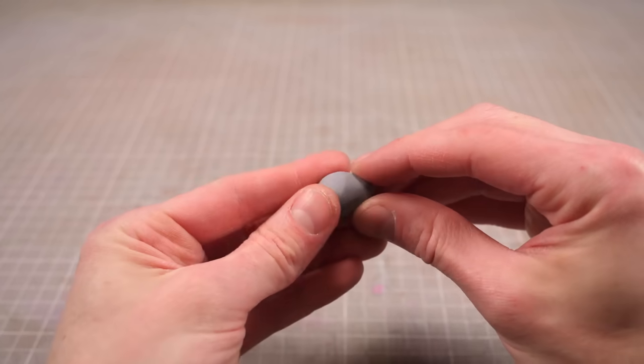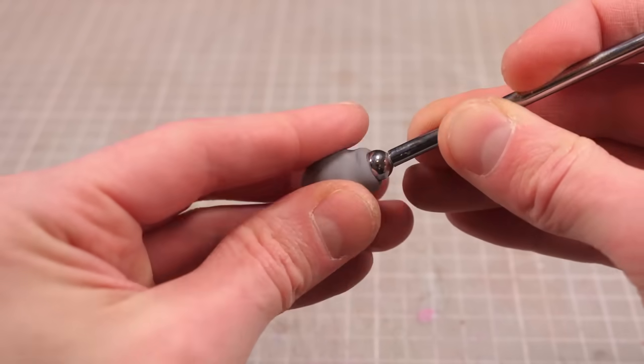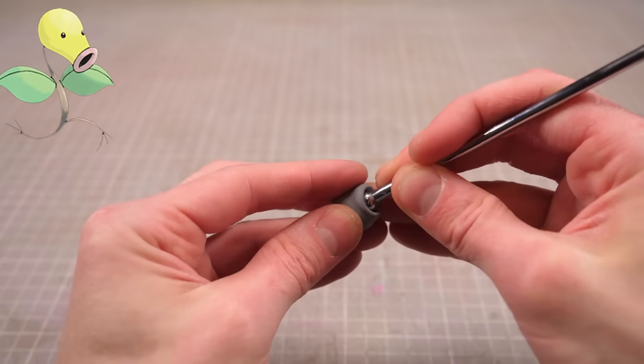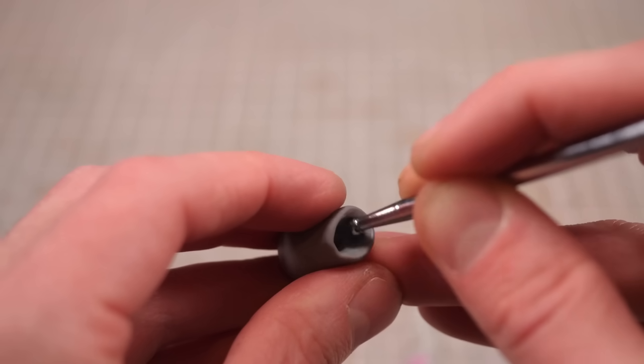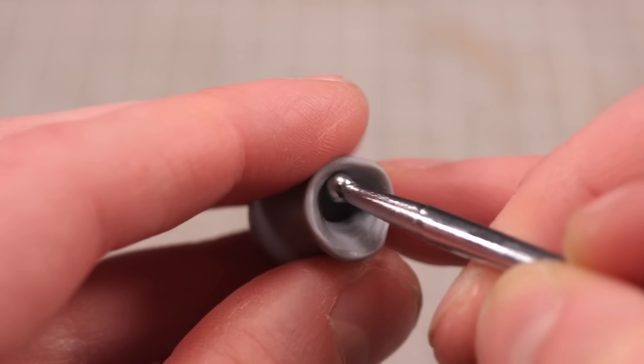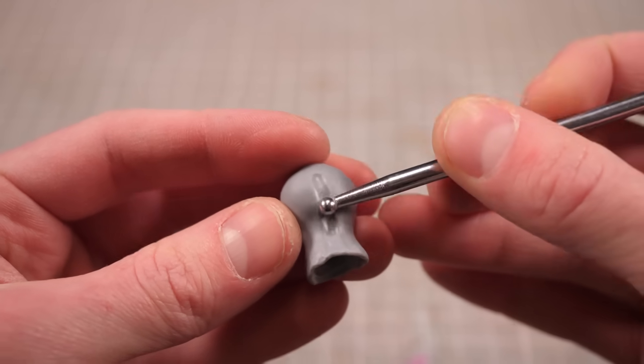Now naturally if I'm going to be making the entire evolutionary line then I really ought to start at the bottom and work my way up, so first thing we'll be making a Bellsprout. I'll start with a little ball of clay that I can then roll into a slightly wonky egg which I can then poke a little hole into the middle of and using some ball styluses I can start to weird it up.